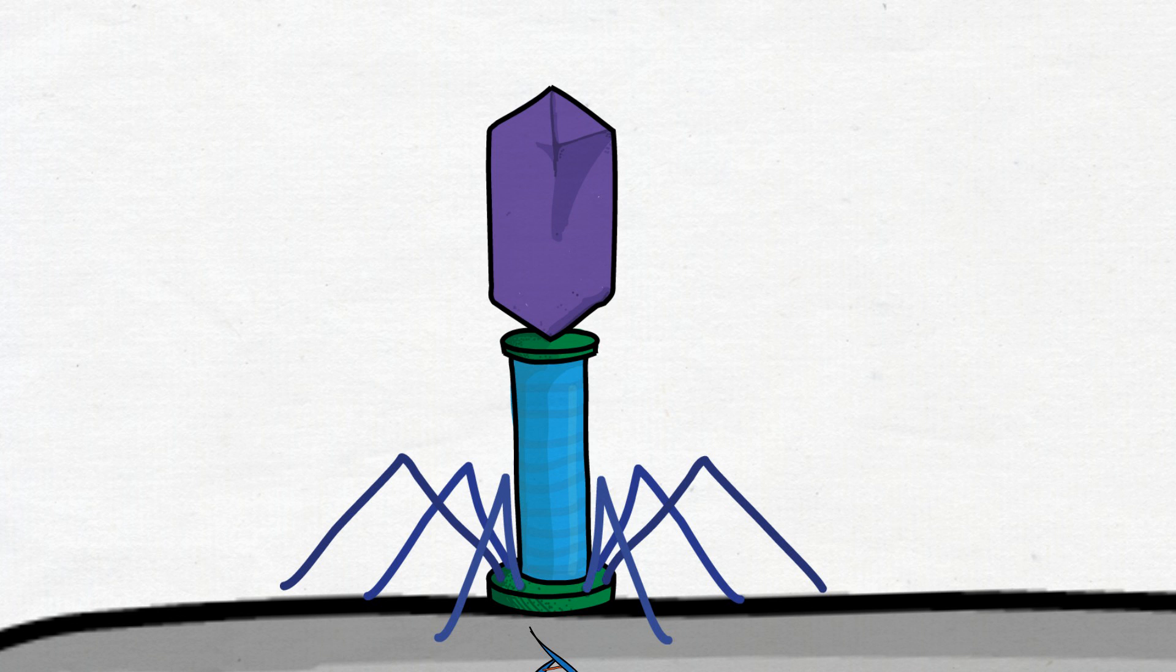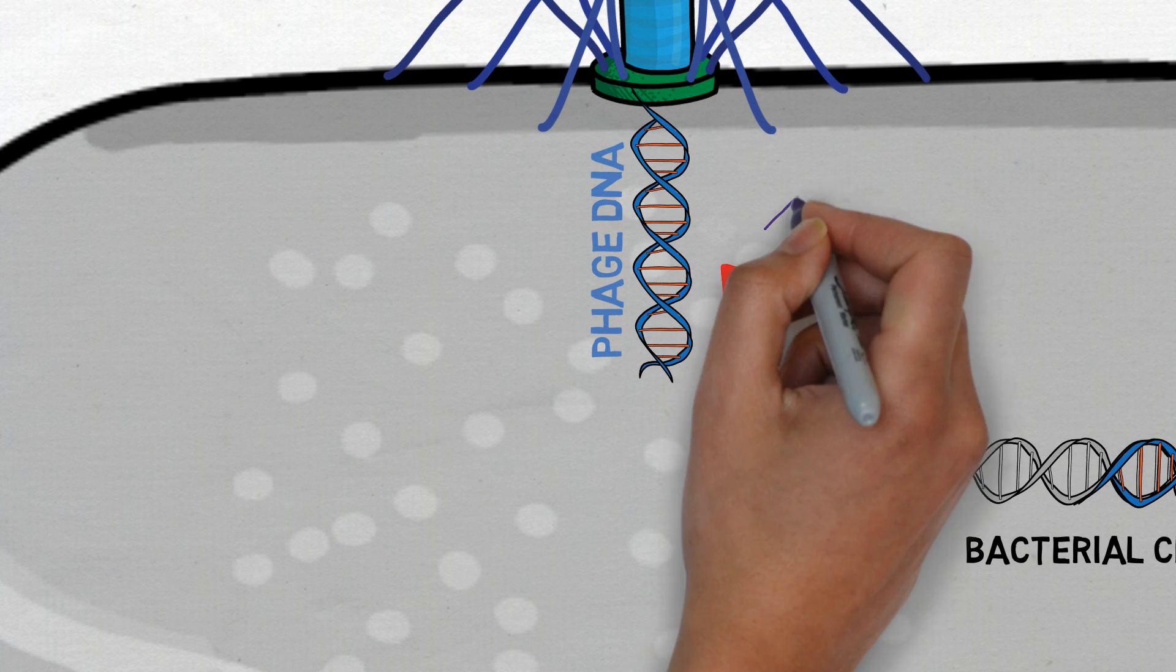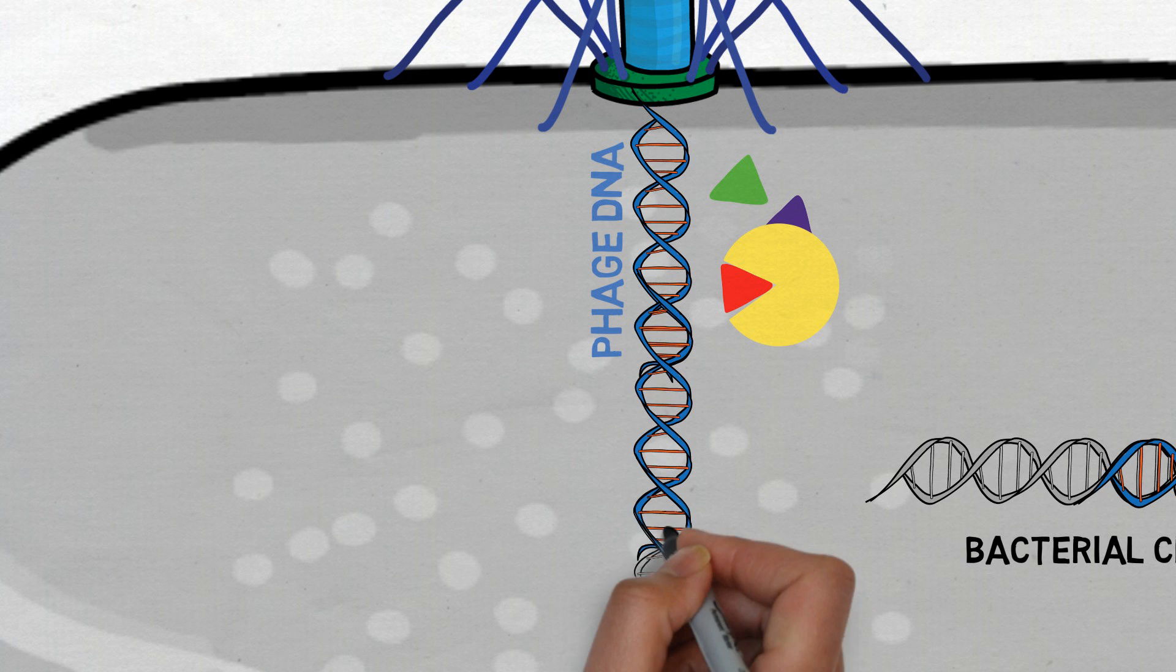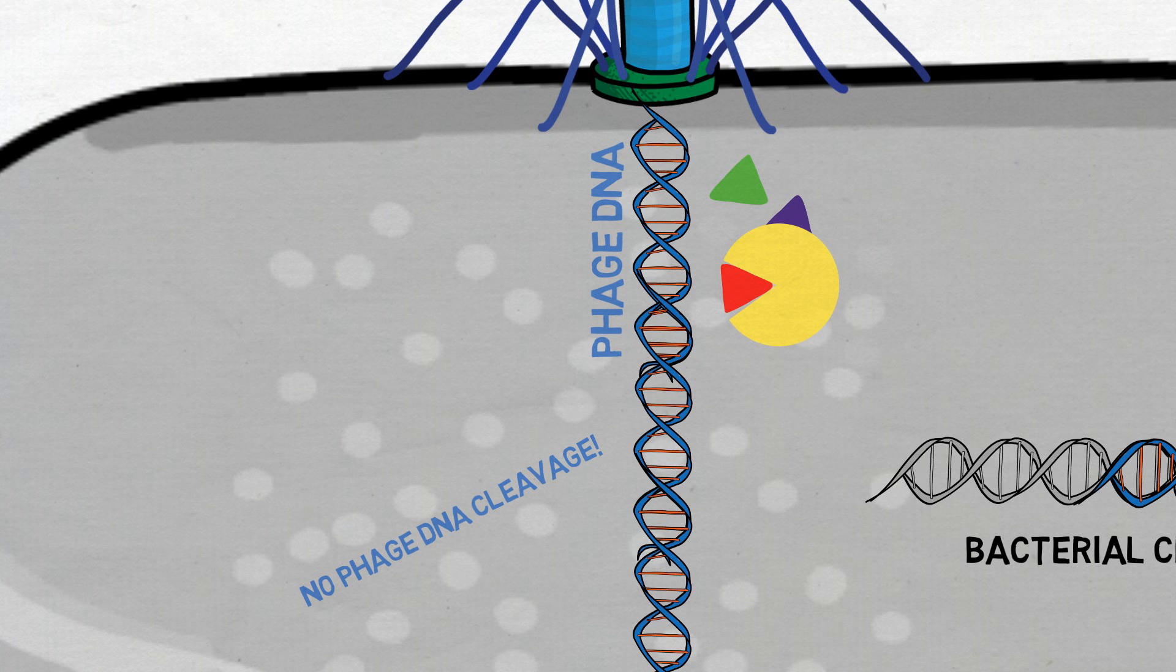Bacteria live, phages die. But phages have evolved a way to fight back. In our study, we identified three phage proteins that block Cas9's ability to cut DNA by binding directly to the Cas9 complex. This anti-CRISPR strategy protects the phage from destruction by the bacterial immune system.